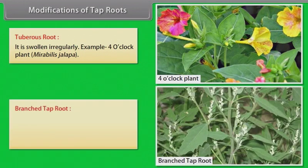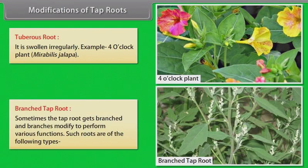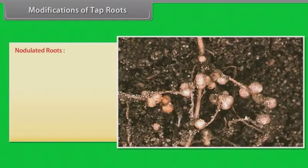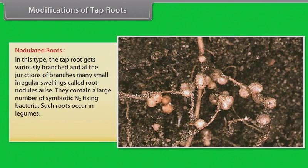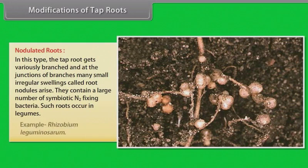Branched tap root: sometimes the tap root gets branched and the branches modify to perform various functions. Nodulated roots — the tap root gets variously branched and at the junction of branches, many small irregular swellings called root nodules arise. They contain a large number of symbiotic nitrogen-fixing bacteria. Such roots occur in legumes. Example: Rhizobium leguminosarum.